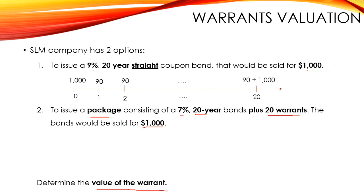Let's see these timelines. In the first option, the investor would pay at period zero the par value, which is $1,000, and he would receive the coupon payment, which is $90, every year until maturity — so until year 20. At maturity, he would receive the $90 plus the par value, which is $1,000.